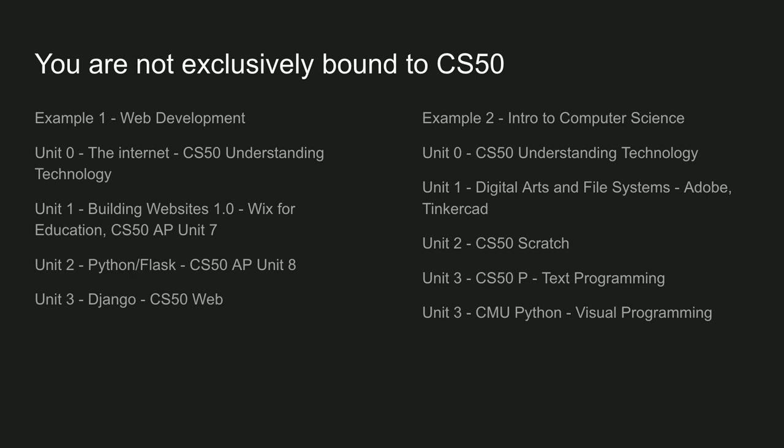So if you look here, my web development class starts with understanding technology and the internet, then jumps into Wix for Education — it's not a CS50 module, but it works. It helps introduce them slowly to the point where they understand Python and Flask, then move to Django. They get a little ramp up. Same with the Intro to Computer Science class — my intro class had a Digital Arts and File Systems unit, which had no CS50 units. It was all about building and designing in Adobe Photoshop and teaching kids how to use file systems. Then we used CS50 Scratch.